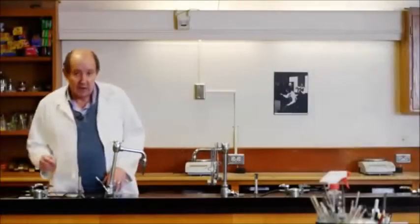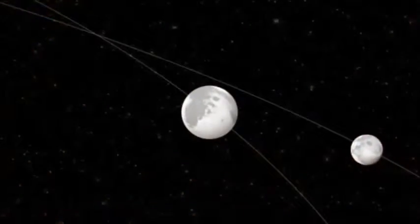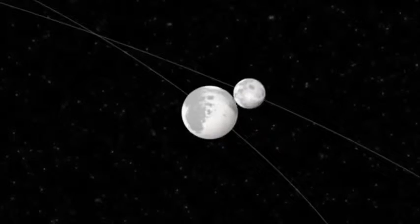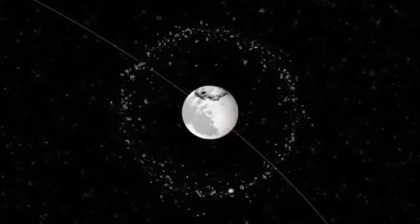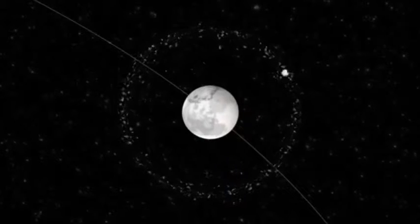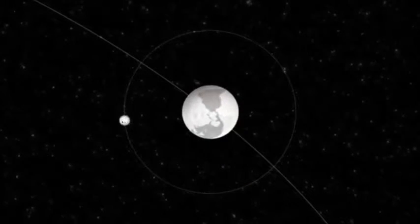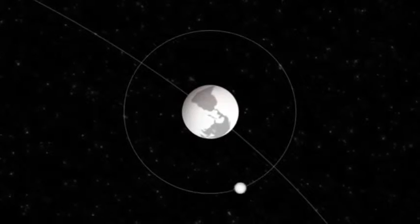Our moon was probably created when an object perhaps the size of Mars collided with our young Earth. It gouged out a huge chunk of the Earth, and that stuff orbited around the Earth and slowly accreted to form the object that we call the moon.